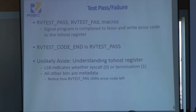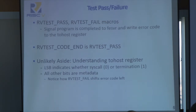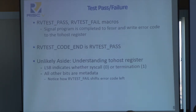This shouldn't be relevant for most of you assuming you continue to use the macros. However, if you do wish to write your own tests without the macros, you should know one small feature of the tohost register. The least significant bit of this register indicates whether the message you are sending to the front end server is to execute a system call or actually ask for termination with an exit code — zero for system call, because it's going to be a pointer, or one for termination. Thus, if you look into the RV test fail and RV test pass macros, they shift the error code to the left by one, and then set that lowest order bit to one. Failure to do this will cause some very strange results.